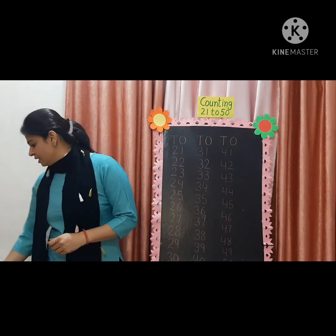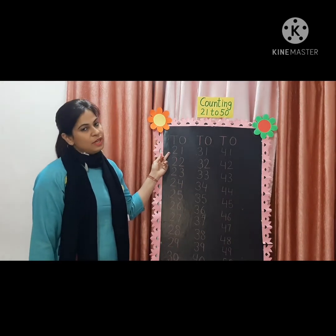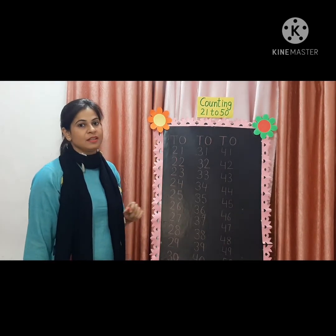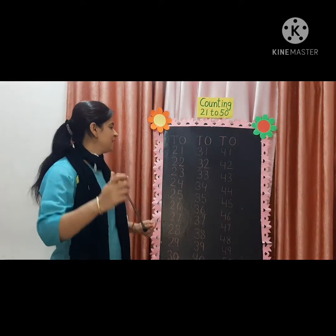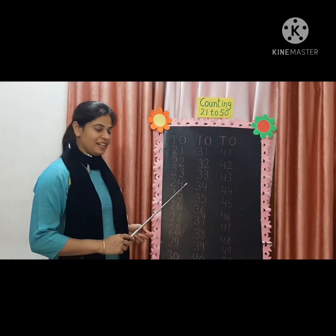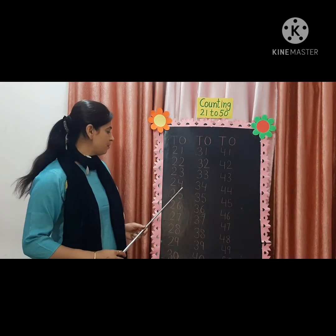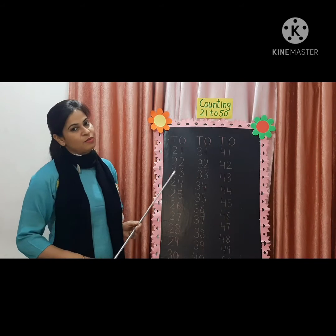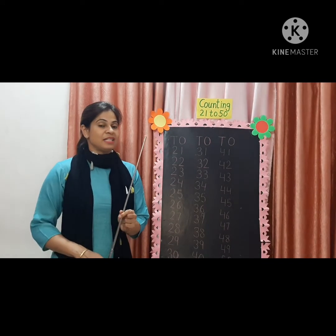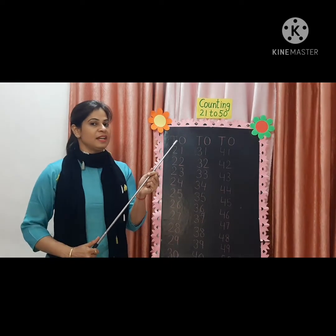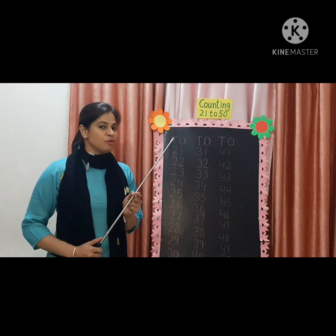Now we will drill this counting once again. 2, 1 — 21. 2, 2 — 22. 2, 3 — 23. 2, 4 — 24. 2, 5 — 25. You all repeat after me. I should hear everyone's voice. I can see some children are not saying it. Everyone must say it. How will the counting be learned if you don't speak?